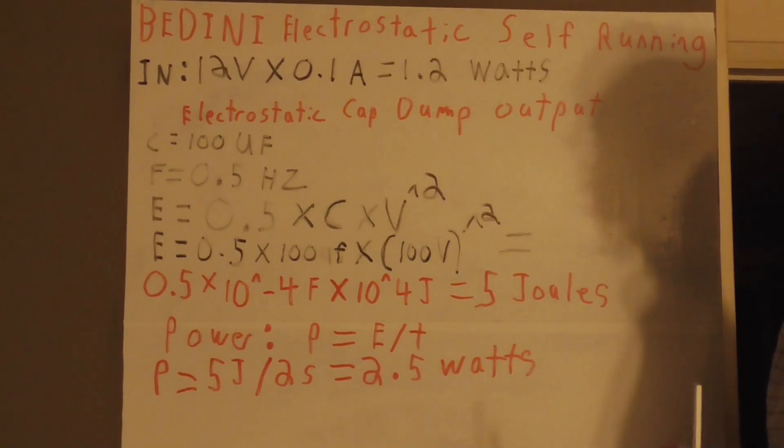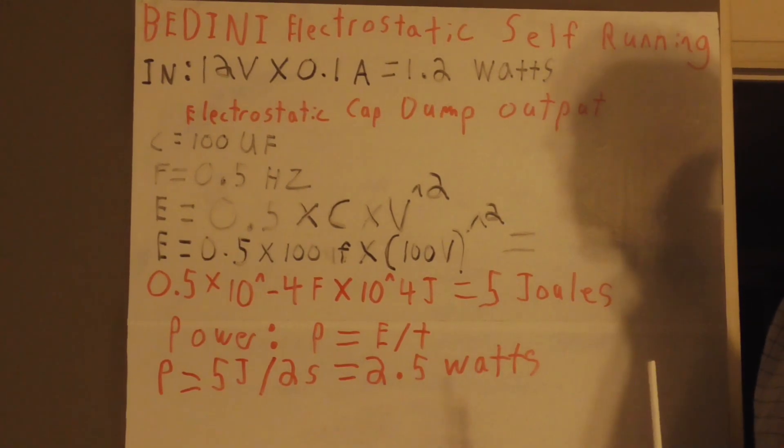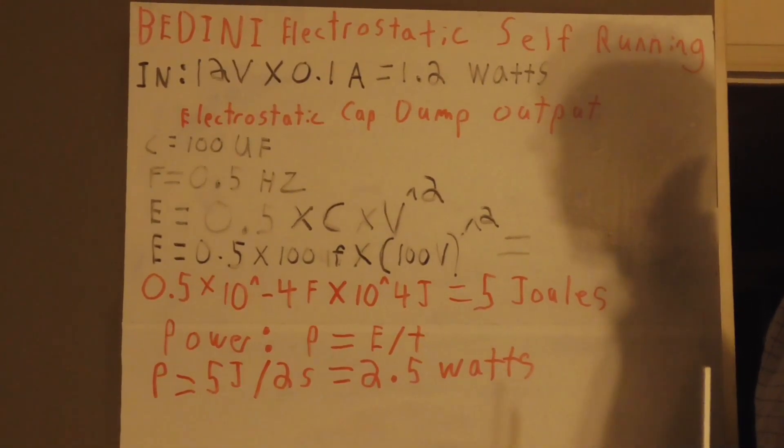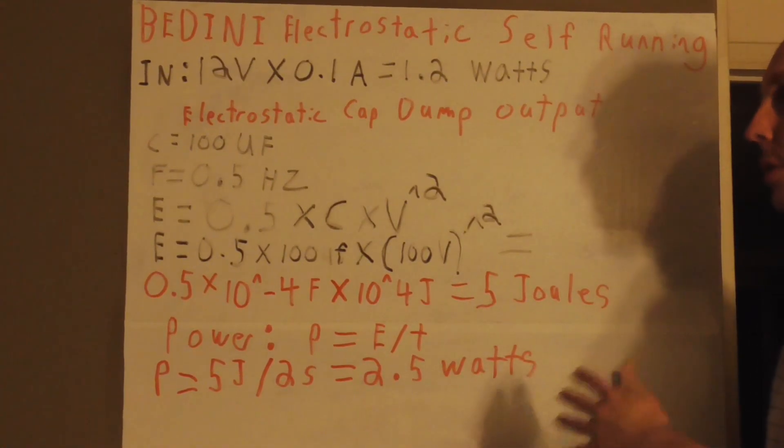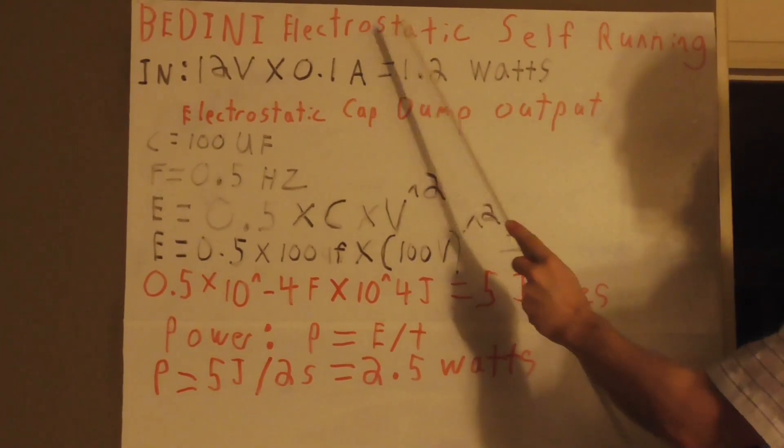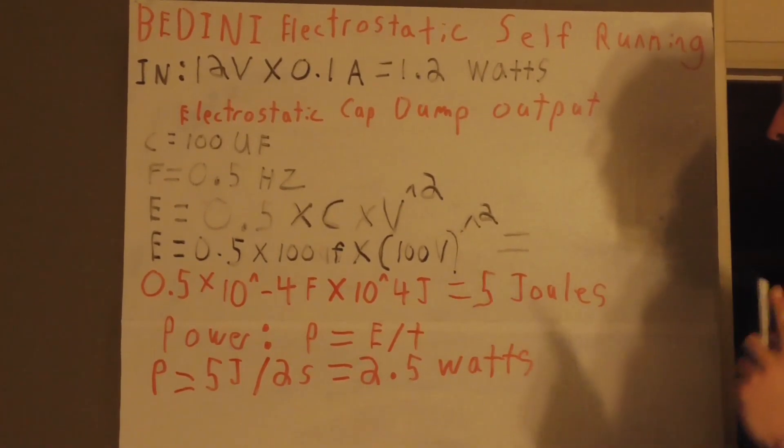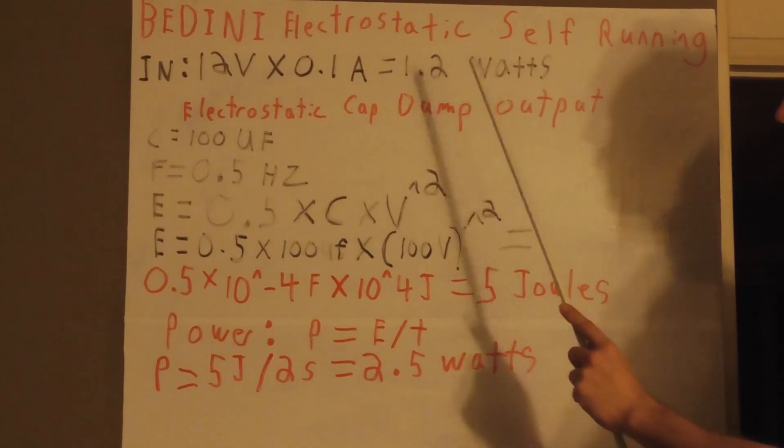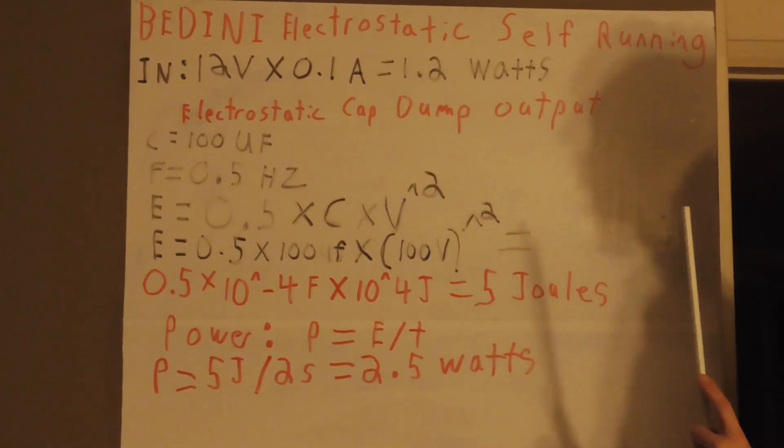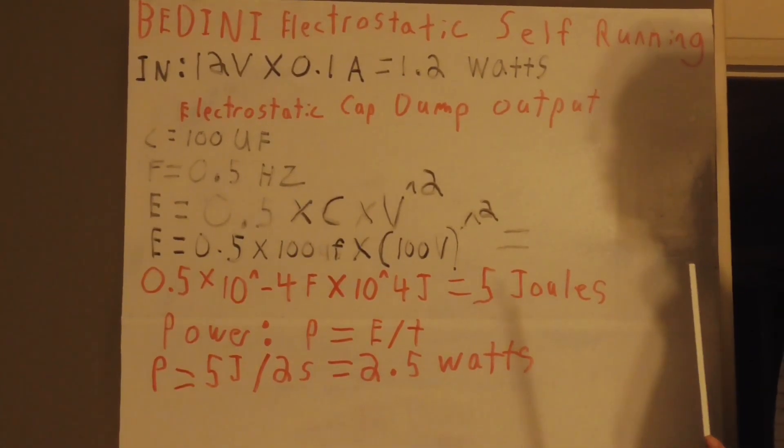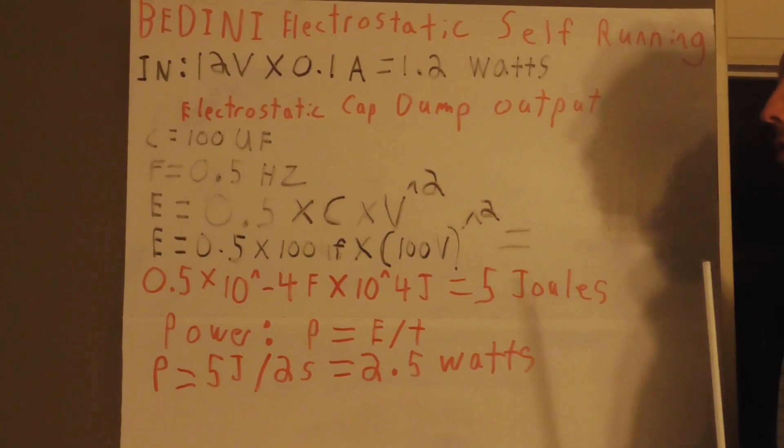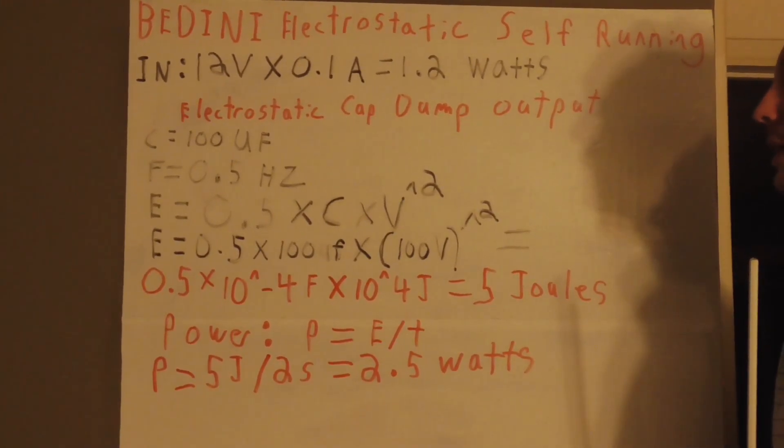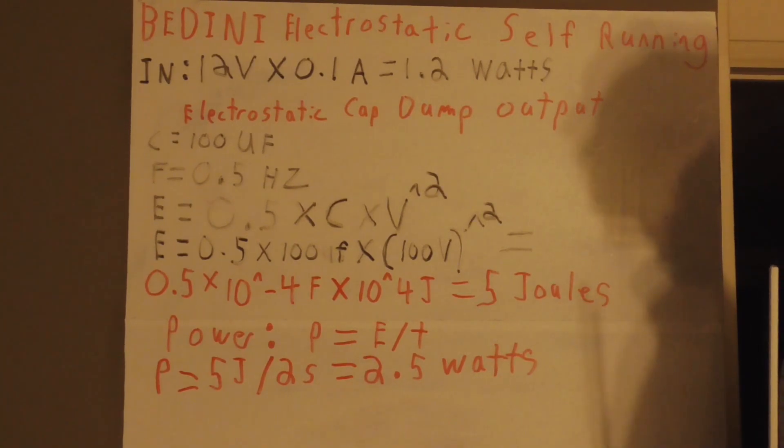And that can supply your capacitor circuit which will dump every time it reaches near 100 volts. So one way or the other, using a high voltage and the capacitor dump, either you want to provide it through the mechanical wheel or through a high voltage circuit, you can power it from the output of the Bedini motor.